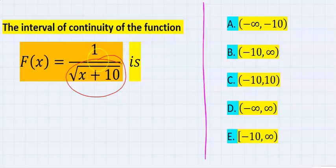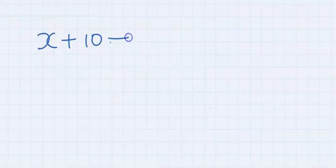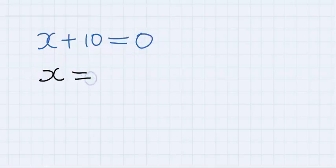Step number one: Solve for the variable inside the square root at the denominator. We are going to equate it to zero. Next, x will be here and 10 will move over and become minus 10.